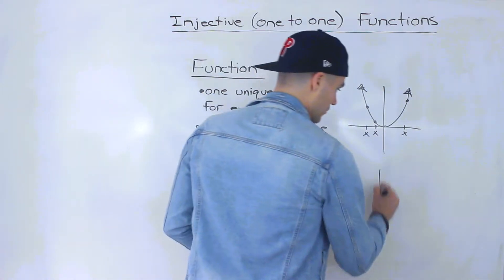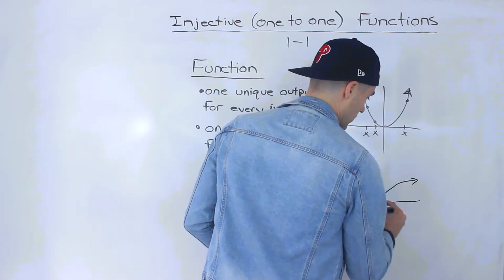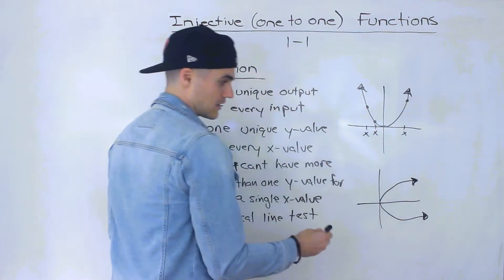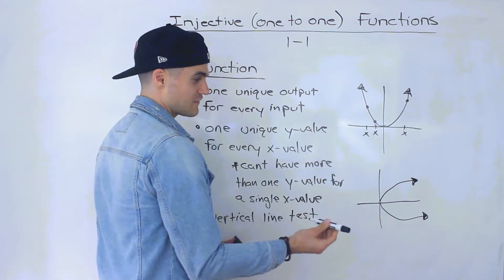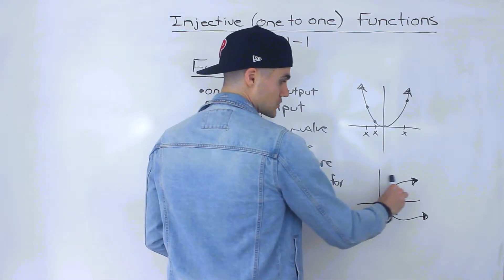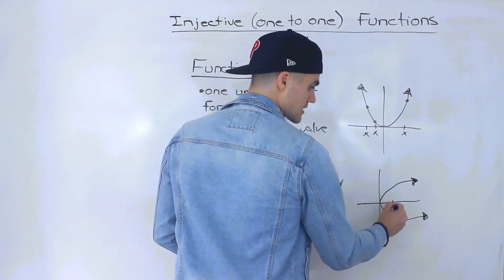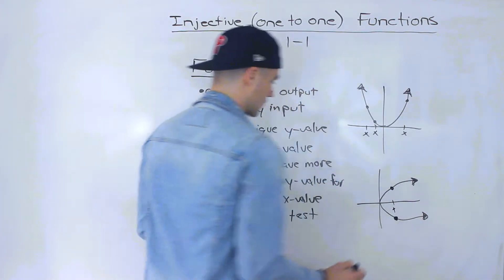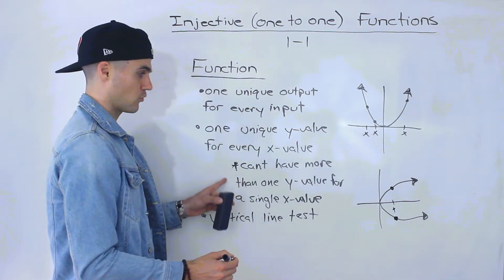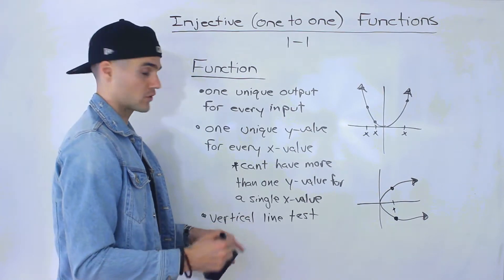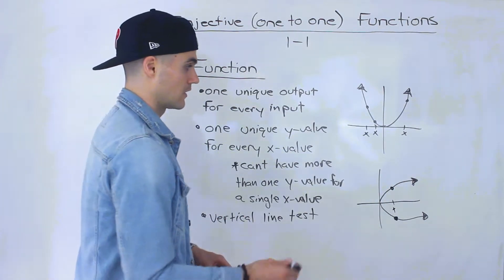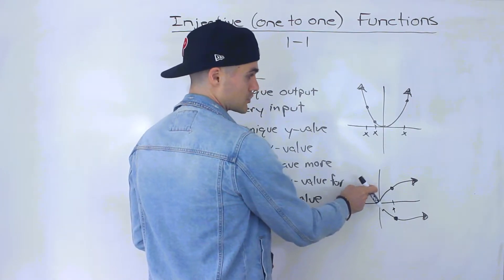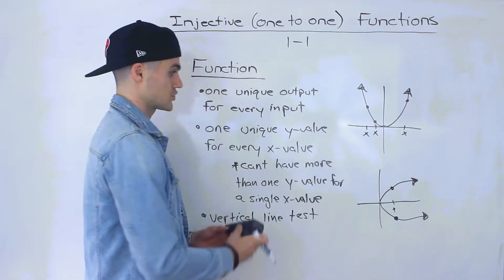Another example: a sideways parabola is not a function because it fails the vertical line test. When we run a vertical line through it, for a single x-value there are two y-values. A function can't have more than one y-value for a single x-value, so this fails the vertical line test and is not a function.